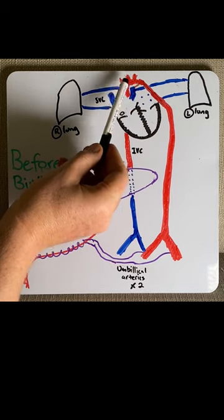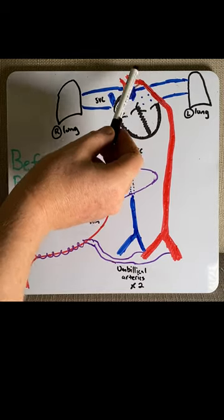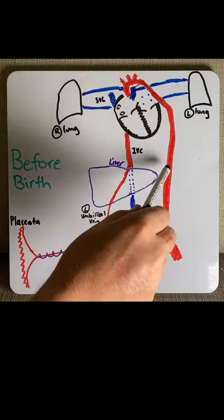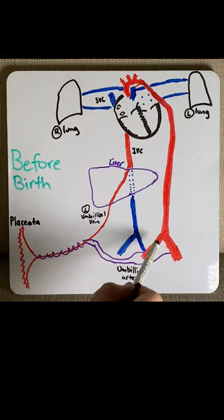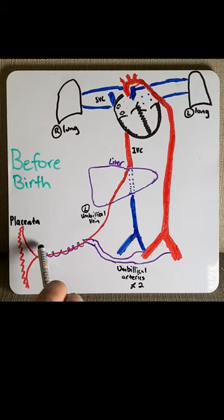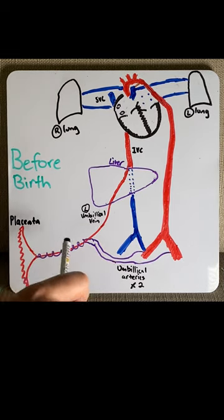This directs blood past the first three vessels, which go to the brain of the fetus. The rest of this blood is sent down the abdominal aorta to the legs, where the two umbilical arteries return blood back to the placenta for oxygenation, and this whole cycle continues.